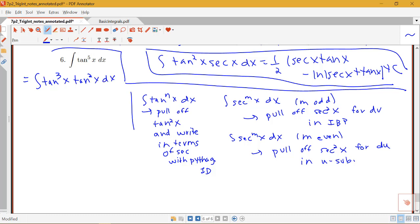Then I'm going to rewrite tangent squared in terms of secants. Remember that 1 plus tangent squared x is equal to secant squared x. So I can say that tangent squared is secant squared minus 1.